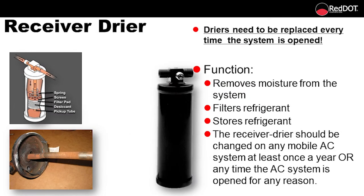Receiver dryer: dryers need to be replaced every time the system is opened. Its function is to remove moisture from the system, filter refrigerant, and store refrigerant. The receiver dryer should be changed on any mobile AC system at least once a year, or any time the system is opened up for any reason. Why is moisture bad in an AC system? R12 plus water equals hydrochloric acid, and R134 plus water equals hydrofluoric acid. Here we have a receiver dryer that has been cut open for an inspection. Note how much corrosion is present — this same corrosion is happening throughout the whole AC system if moisture is present. It literally corrodes from the inside out.